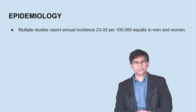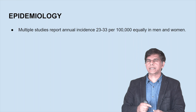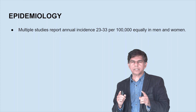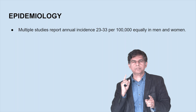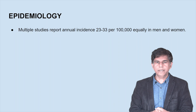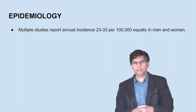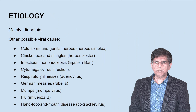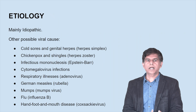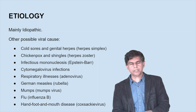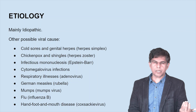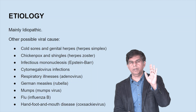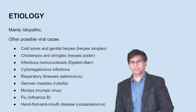Other possible viral causes include cold sores and genital herpes — herpes simplex. There are a lot of reports about herpes simplex. Also herpes zoster, Epstein-Barr, CMV, respiratory illness, German measles, mumps, flu, and hand, foot, and mouth disease. Regarding pathogenesis, Bell's palsy is mostly idiopathic — nobody knows what causes it — but remember herpes simplex virus is a key association.